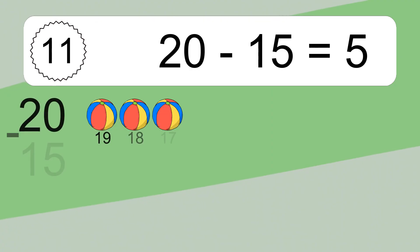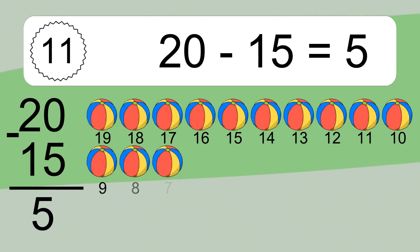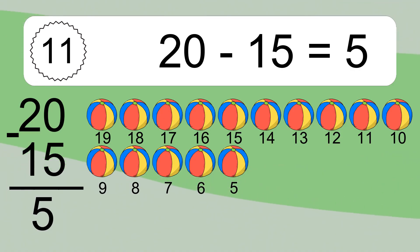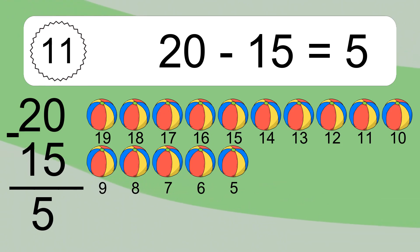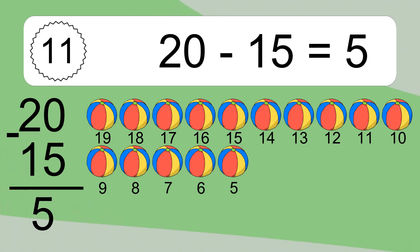20 minus 15 equals 5. Let's count it: 19, 18, 17, 16, 15, 14, 13, 12, 11, 10, 9, 8, 7, 6, 5. 12 minus 3 equals what?